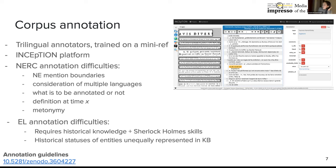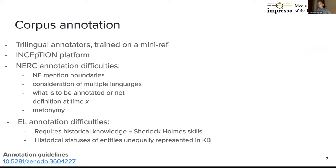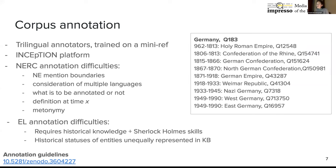If we consider linking, one can really say that historical knowledge is required to link entities from historical documents to Wikidata. But it's not enough — one also needs very accurate Sherlock Holmes-like skills, because persons and entities mentioned in historical documents are not VIPs but people who were known at that period, and even for historians they can be layman people. So it's a real investigation to know who is who. Another difficulty is the unequal representation of entity historical status in the knowledge base. For example, Germany has eight QIDs for different time periods in the 19th and 20th centuries, whereas for other countries there was only one QID, introducing inconsistencies.